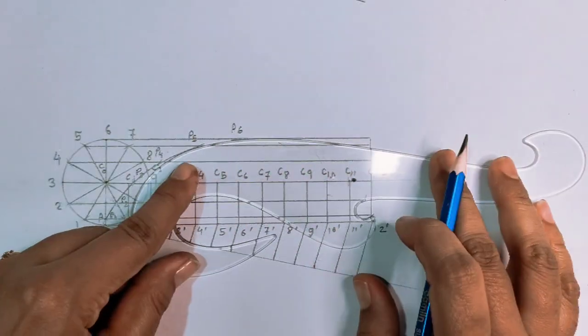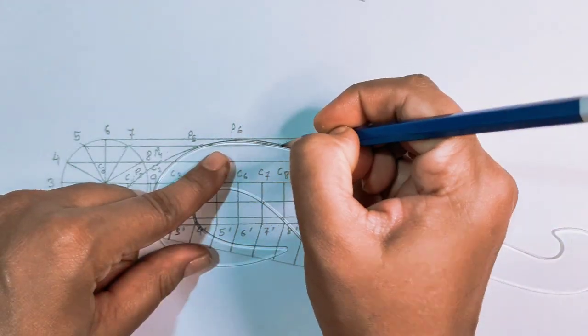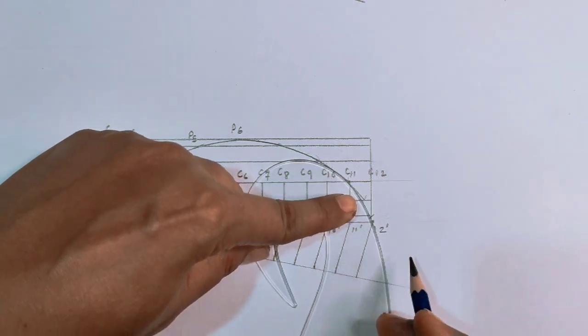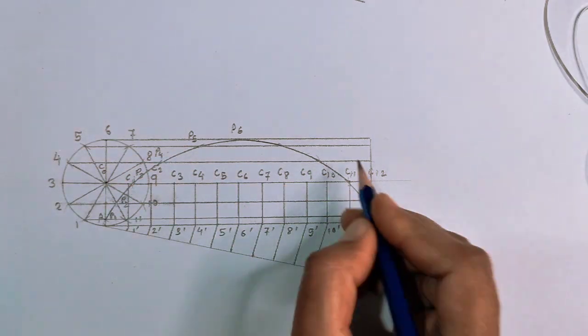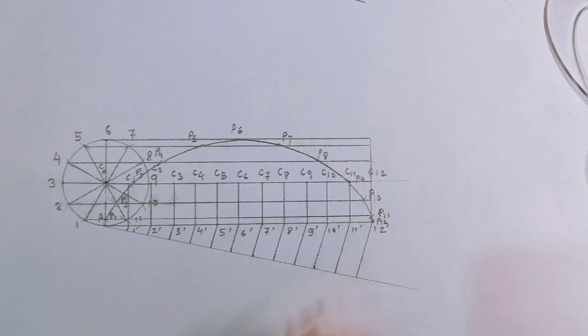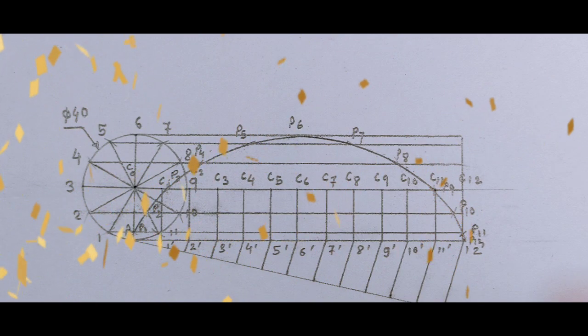The last step: draw a smooth curve through the points P, P1, P2, up to P12. This is all about the cycloid. Hope you liked the session, thank you.